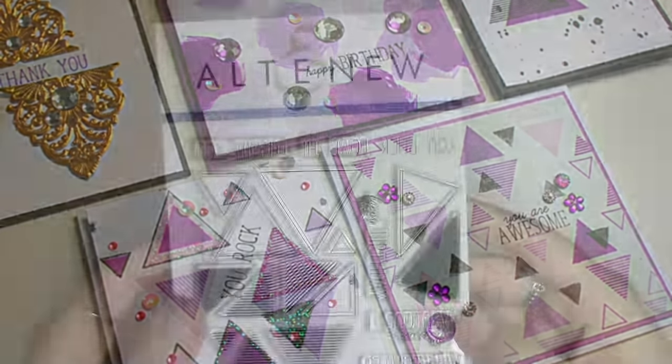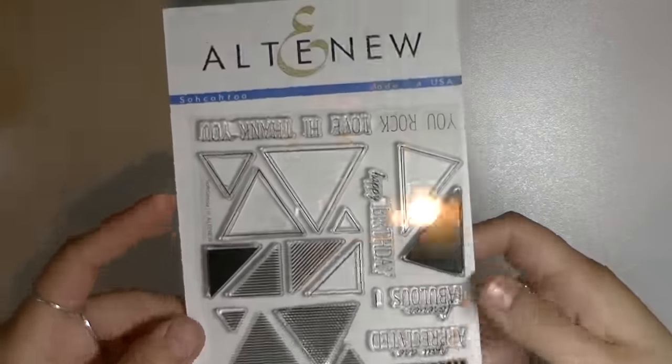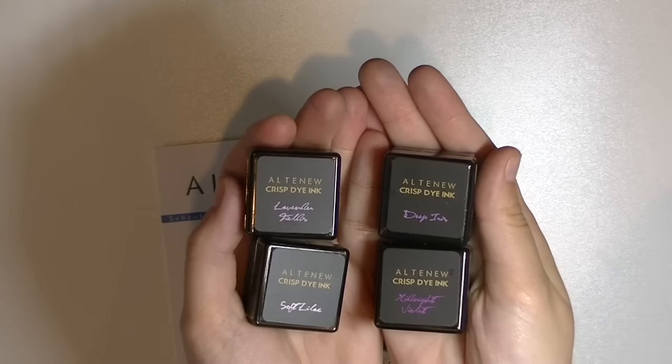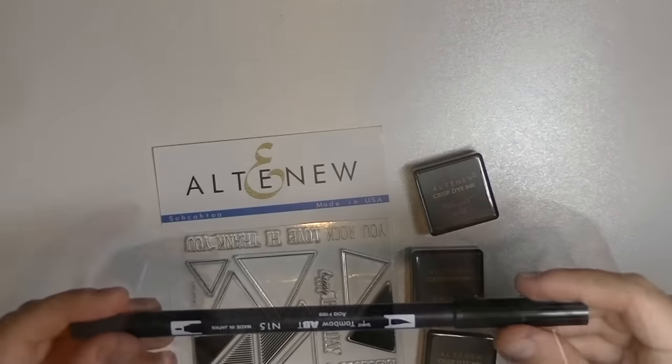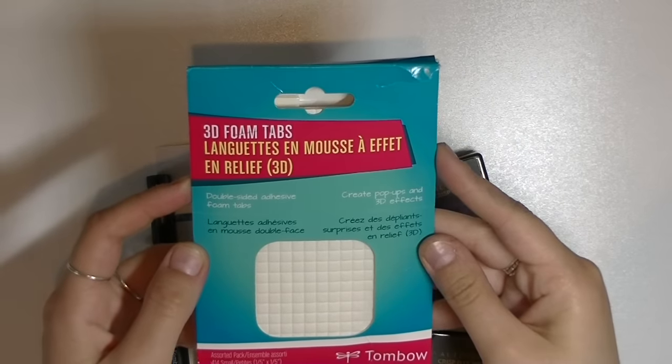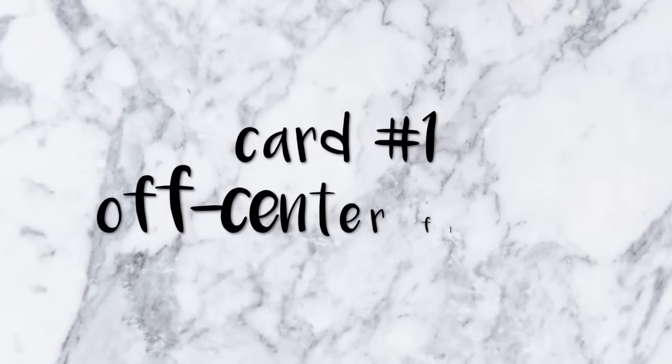Today I'll be making five cards using the Sokotoa stamp set from Altenew and their Shades of Purple ink set. I'll also be using their Fenstone decorative element and Tombow products like the Tombow Black Dual Brush Pen, the Tombow 3D Foam Tabs, and this new Tombow Mono Adhesive Plus Permanent Glue which I'm loving and can't wait to show you how it works. So let's get started with the first card.